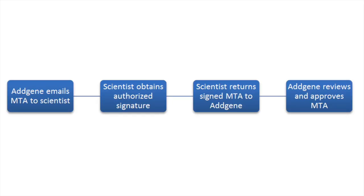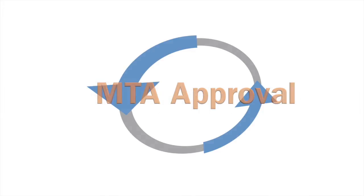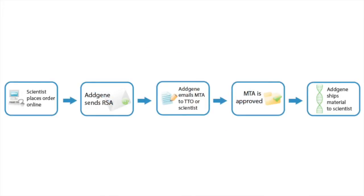To learn how your tech transfer office can speed up this process for you, please click here. After you submit your signed MTA to Addgene, we will promptly review it and let you know if your MTA has been approved or if it requires further action. Following MTA approval, your order will process in our lab for 2-3 business days. Plasmids from Addgene are sent as bacterial stabs, which take time to grow before they are shipped out. When your order ships, we will send you a shipping confirmation email along with your UPS tracking number. Orders from Addgene are shipped overnight to organizations in the U.S. and through UPS Worldwide Express to organizations outside of the U.S.